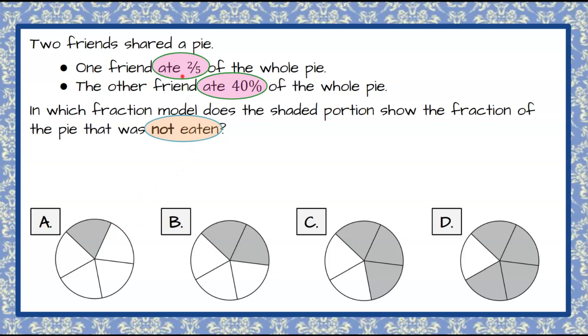So we're going to keep our friend that ate two-fifths, and we're going to put their fraction here. So we have two-fifths of the pie. So that means two of our five slices was eaten by the first friend.